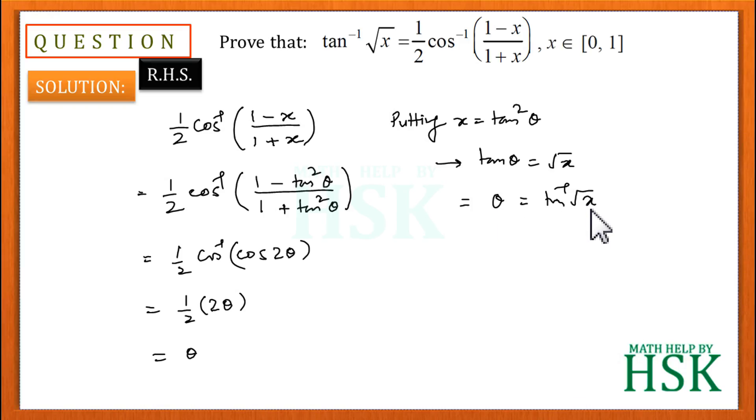So on calculating the value of theta from x equals tan square theta, I get theta equals tan inverse of root x. This gives me the value equal to the left hand side, and this proves that tan inverse of root x equals 1/2 times cos inverse of (1 minus x) upon (1 plus x).